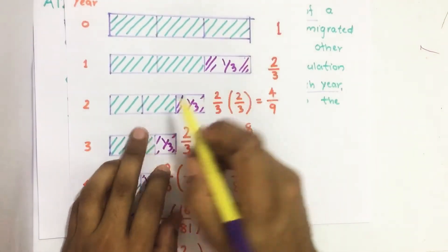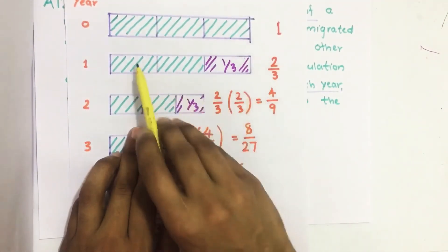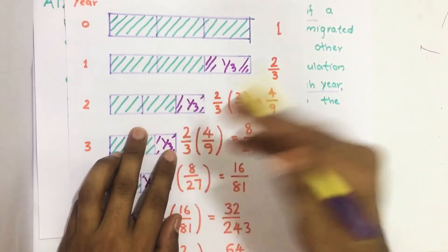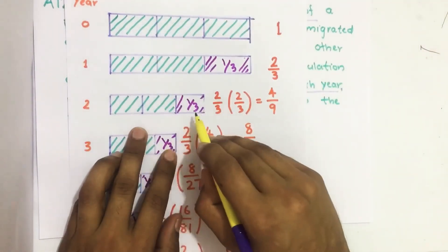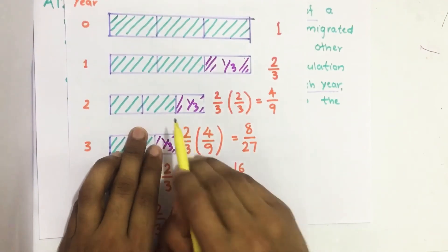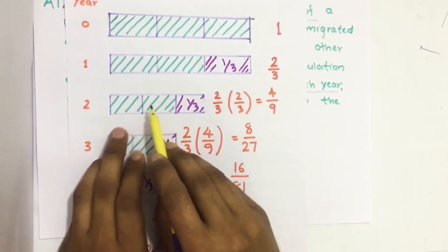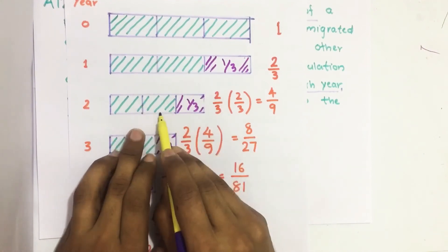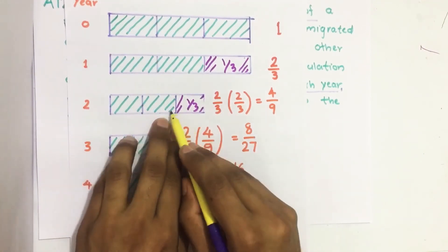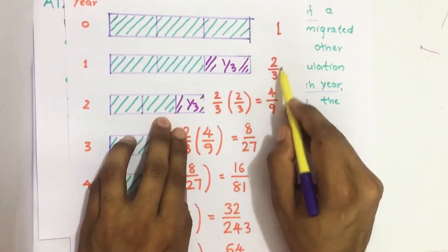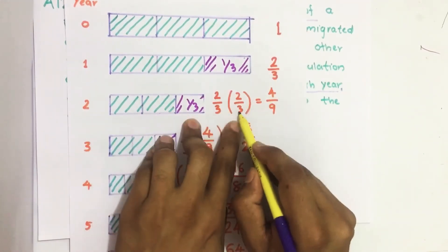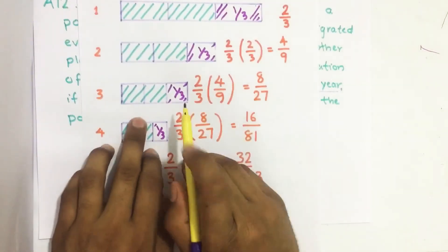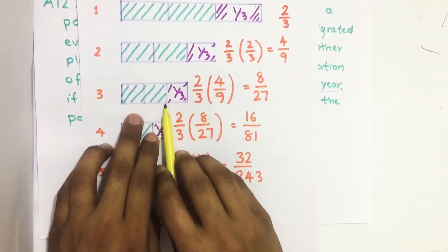In the second year, from whatever remains, one third of that remaining population leaves. So the remaining is two thirds of the previous remaining population: two thirds of two thirds gives us four by nine.